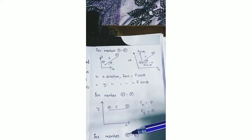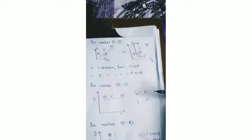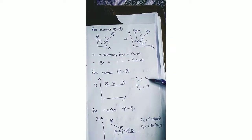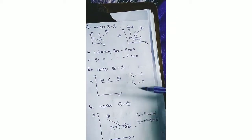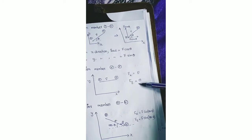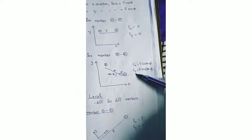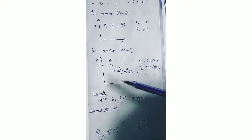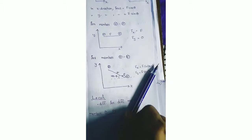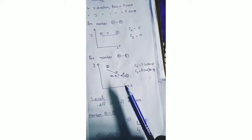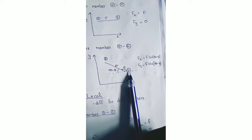Member 1-2 is inclined at an angle theta from the x-axis. Force in the x-direction is f·cos θ and in the y-direction it is f·sin θ. For member 2-3, force is f itself in the x-direction because the member is parallel to the x-axis, and there is no force in the y-direction. For member 3-4, fx = f·cos(180° − θ) and fy = f·sin(180° − θ). In direct stiffness method, angle is always taken from the x-axis in the anti-clockwise direction.